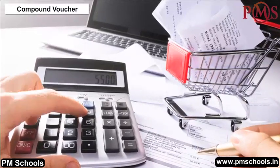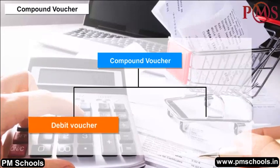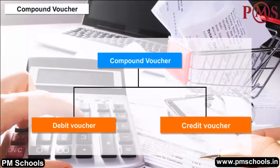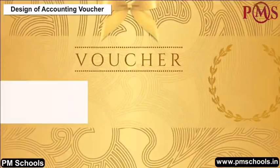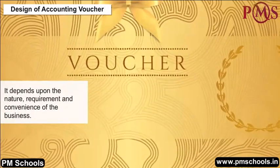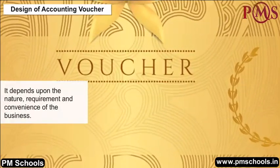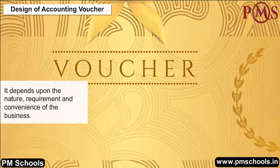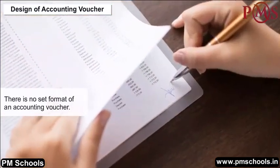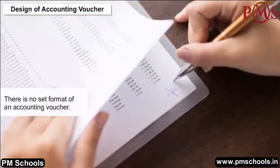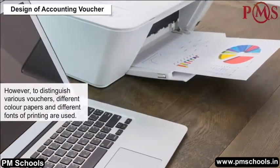A compound voucher records a transaction that entails multiple debits or credits and one corresponding credit or debit. Types of compound vouchers include debit vouchers and credit vouchers. The design of an accounting voucher depends upon the nature, requirement, and convenience of the business. Different color papers and different fonts are used to distinguish various vouchers.